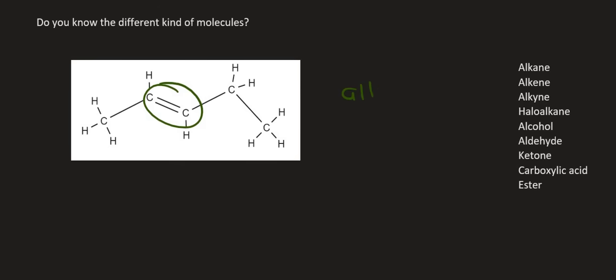This one's quite easy. There it is. We have a double bond. So double bonds are categorized as alkenes, not alkane, alkene.